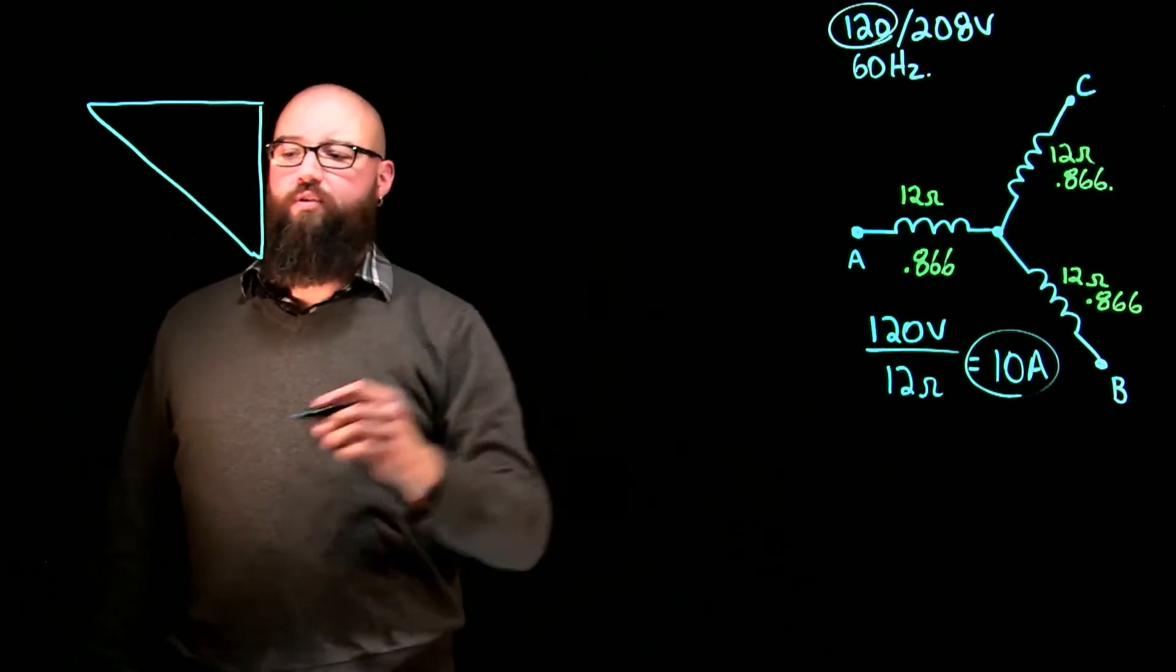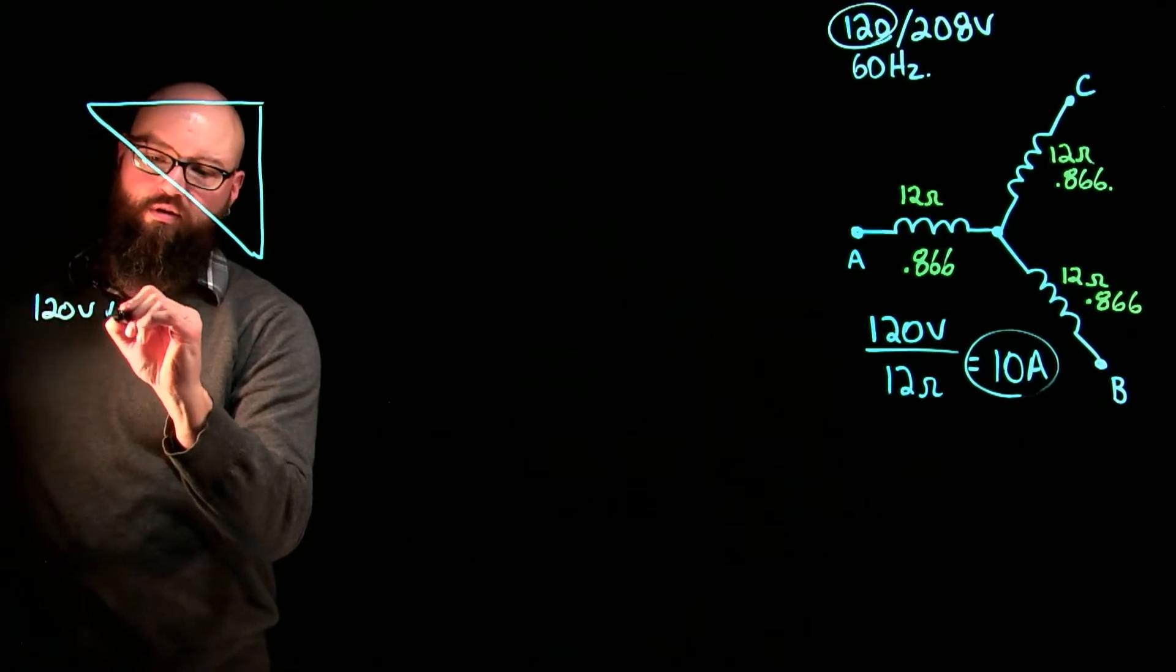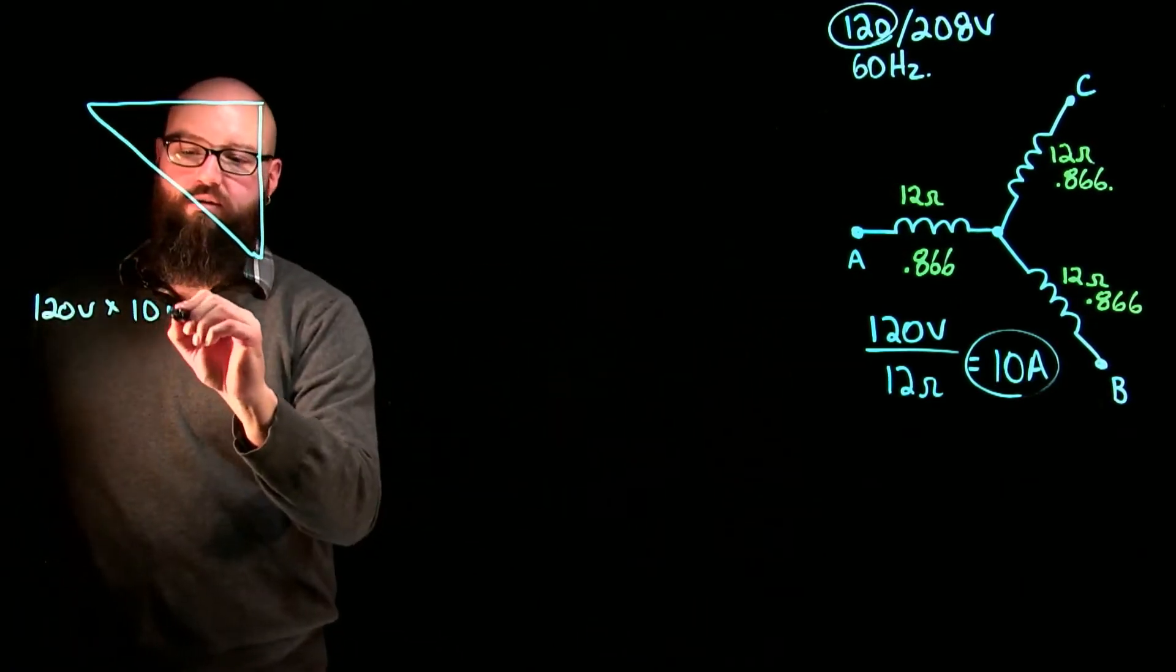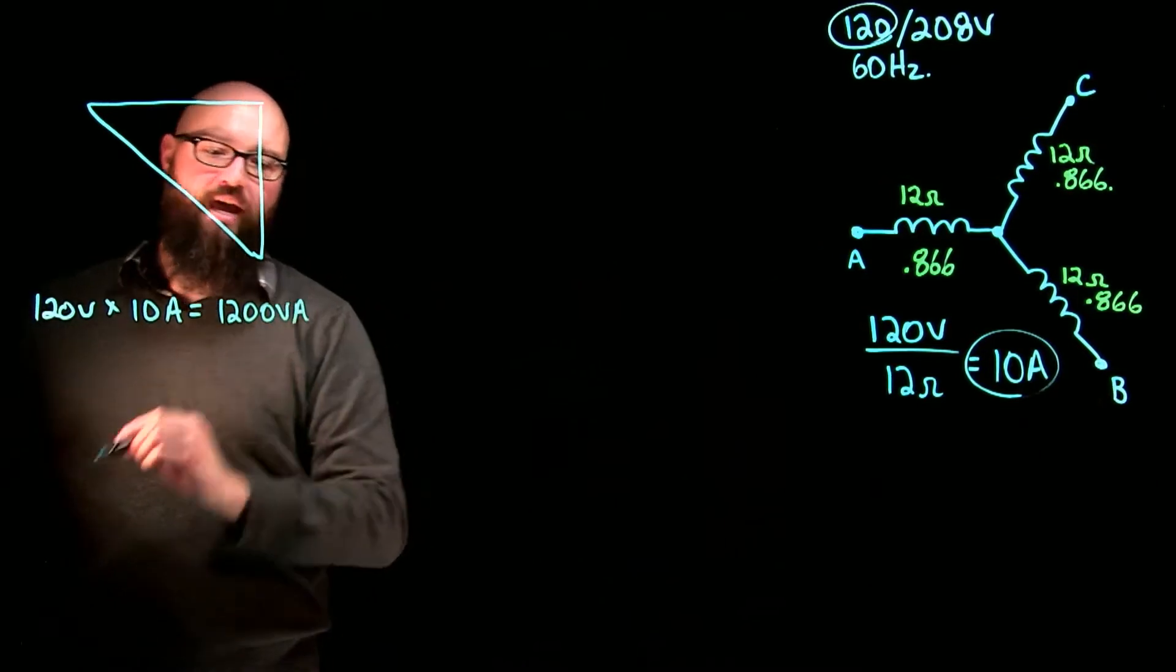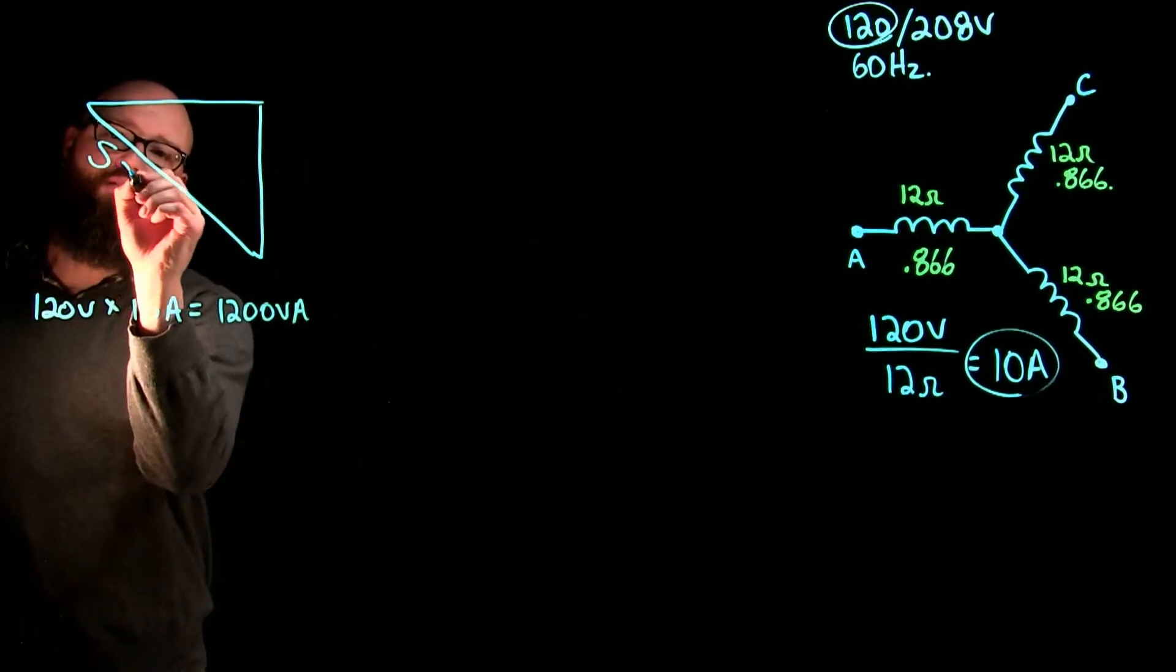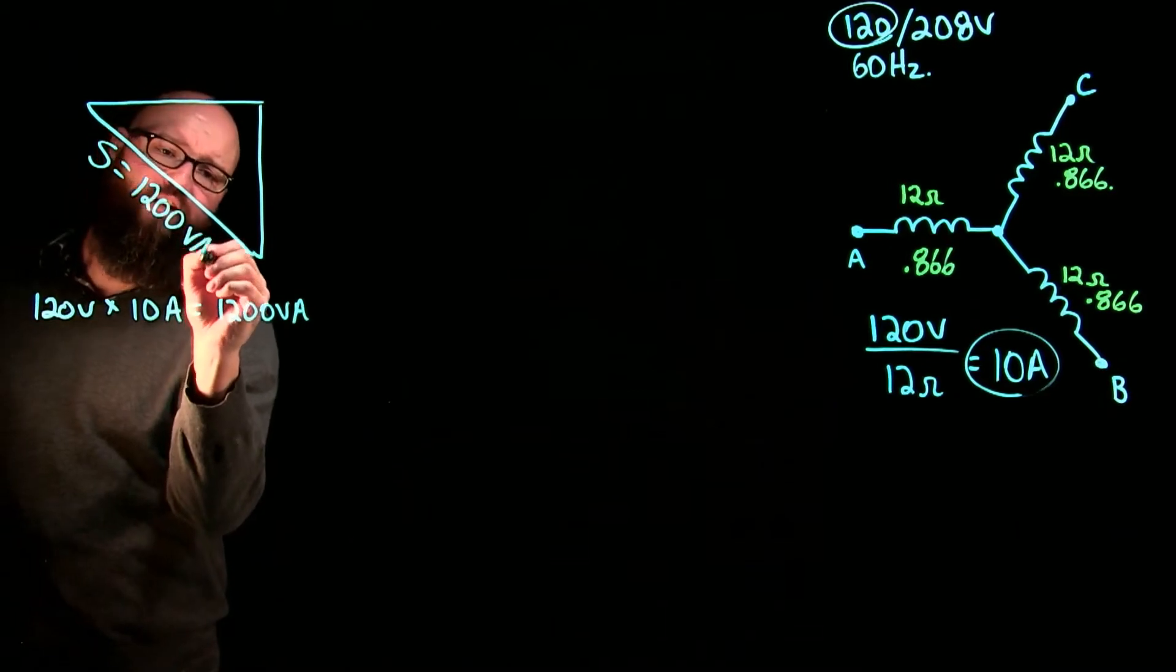So 120 volts times 10 amps gives me 1200 VA and I can plot that right here. S equals 1200 VA.